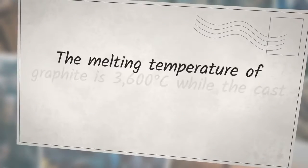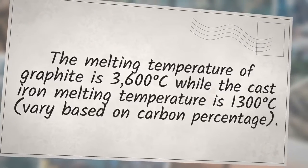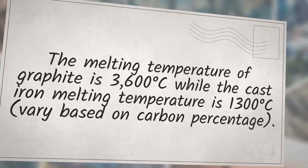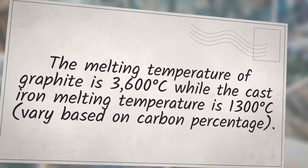The melting temperature of graphite is 3600 degrees Celsius, while the cast iron melting temperature is 1300 degrees Celsius, varying based on carbon percentage.